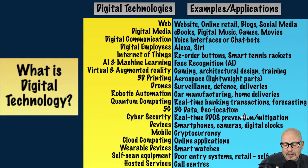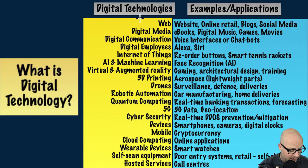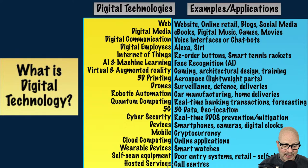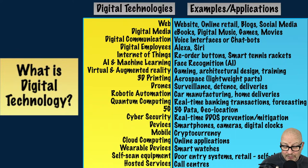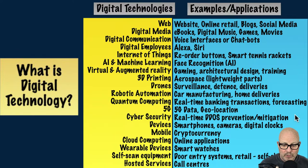First: what are digital technologies? The examples we can think about are the web and digital media. On the left-hand side here we have the definitions of the different types of technologies, and on the right-hand side we've got examples. You might want to look through that and remind yourself about the variety and range of different technologies out there and the sorts of applications and the way these technologies are used.